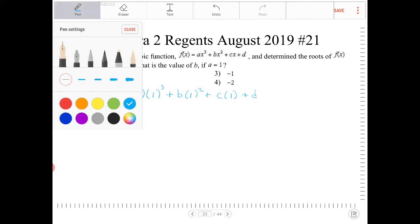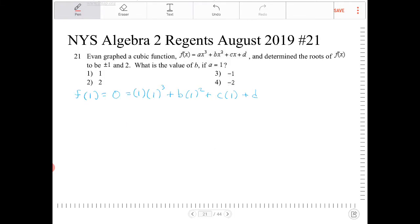So, this equation, I'm going to write this in red because this is critical to solving the problem. I have 0 equals 1 plus b plus c plus d. Again, 0 equals 1 plus b plus c plus d.